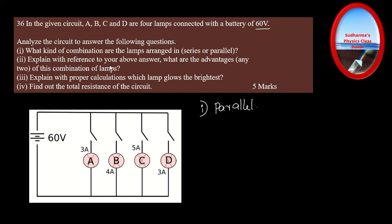Explain any two advantages of this parallel combination. Be careful — if you mistakenly identified this as series, your second answer would also be wrong. In parallel: the voltage is supplied equally to all devices, and each device draws the current it requires. Also, if one device goes faulty, the others are not affected because each device operates on its own individual switch and branch.